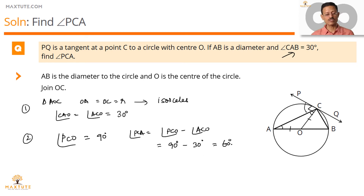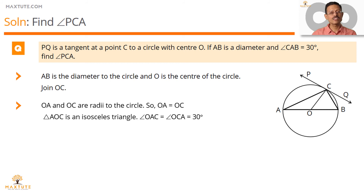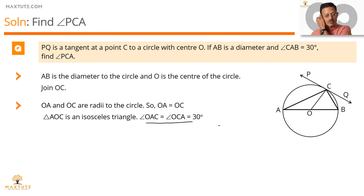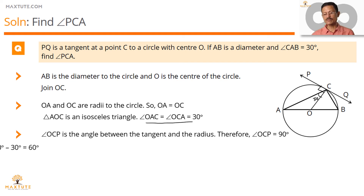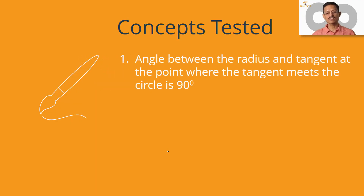To recap: sides OA and OC of triangle AOC are both radii, making it an isosceles triangle. The two equal opposite angles — angle OAC and angle OCA — both measure 30 degrees since angle CAB equals CAO equals 30 degrees. The second property: the angle between the radius OC and the tangent PQ at the point of contact is 90 degrees. So angle OCP equals 90 degrees, angle ACO equals 30 degrees, and the required angle PCA equals 60 degrees. The two concepts tested are: the angle between the radius and the tangent at the point of contact equals 90 degrees, and in an isosceles triangle, two sides and their two opposite angles are equal.